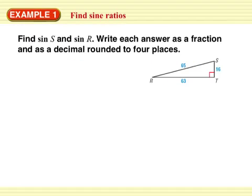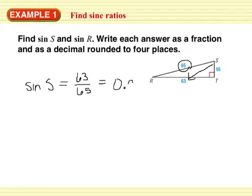Example one, find sine of S and sine R. Write each answer as a fraction and as a decimal rounded to four places. So I have sine of S. Remember, sine is opposite over hypotenuse. So S, opposite over hypotenuse, we get 63 over 65. I can't simplify that any, so I type it out in my calculator. I get 0.9692.